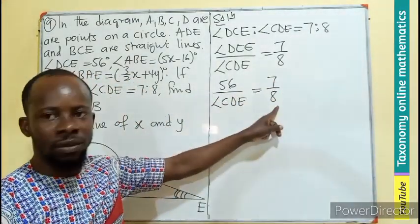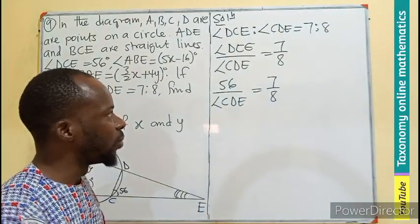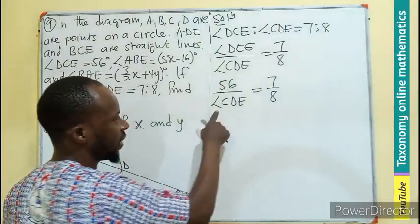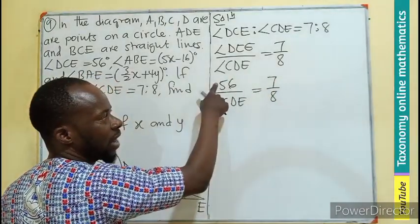We can find it by doing cross multiplication. So this is multiplied, this is multiplied.